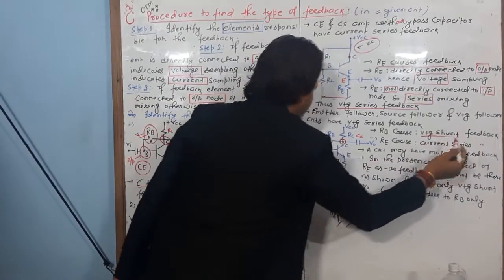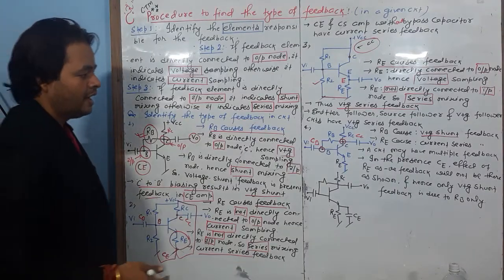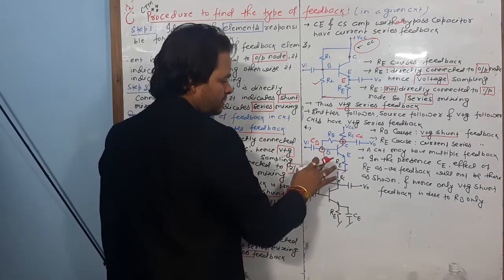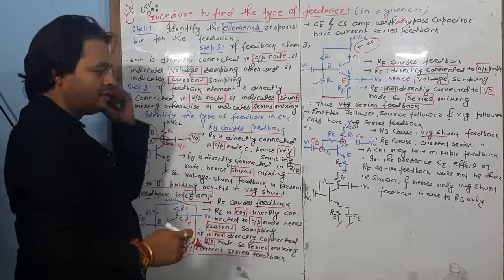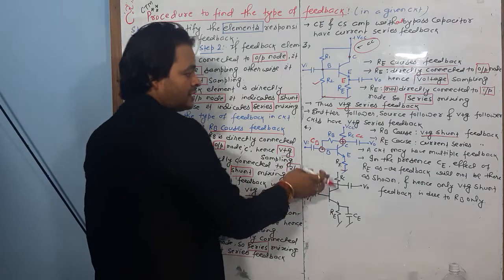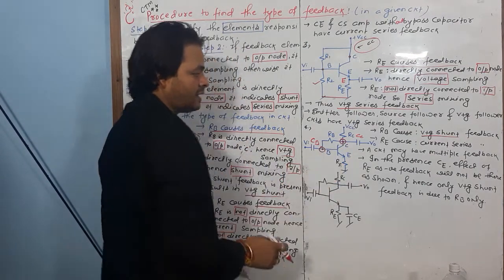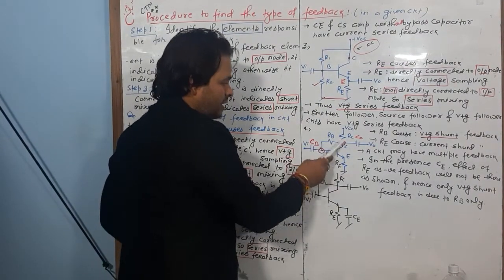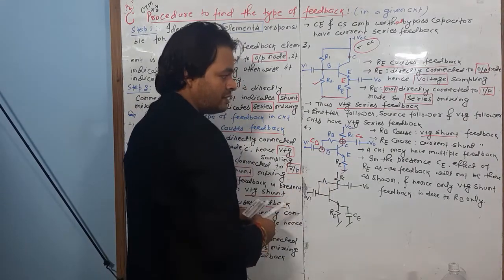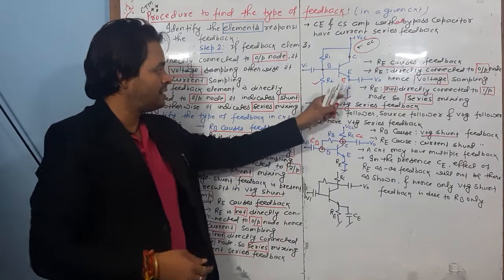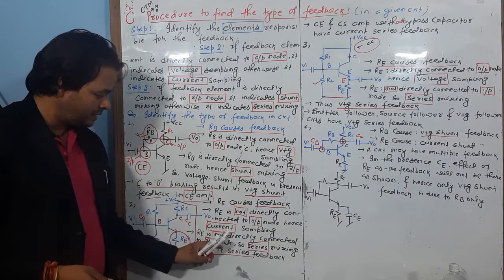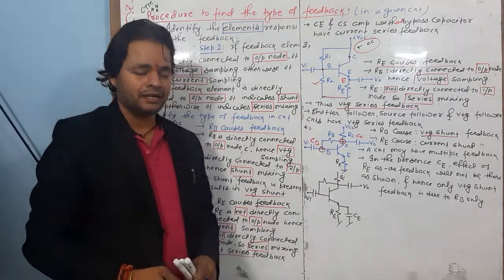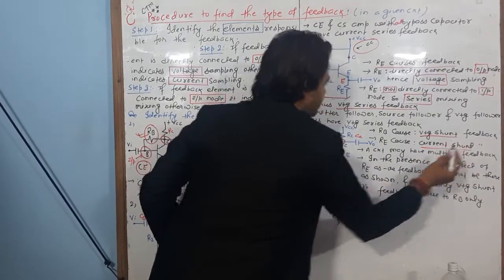Because of that, RB causes voltage shunt feedback — both connections are direct. Now, RE is directly connected to the base, which is the input — that is shunt mixing. And RE is also directly connected to the output node, giving voltage sampling. So RE causes voltage shunt feedback as well. Wait — let me clarify: RE is directly connected to output (voltage) and directly connected to input (shunt), so RE causes current shunt feedback.